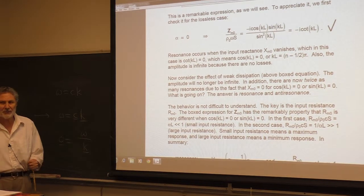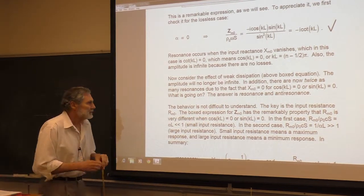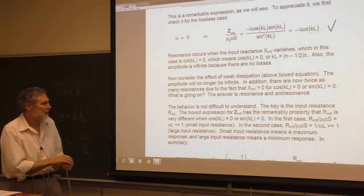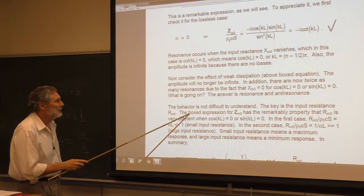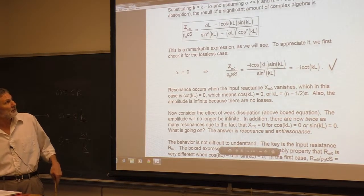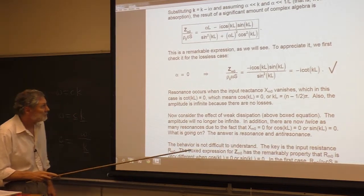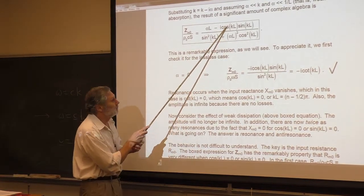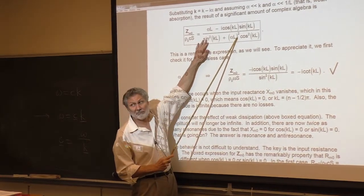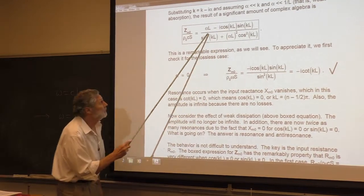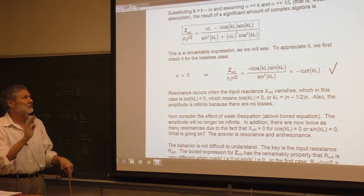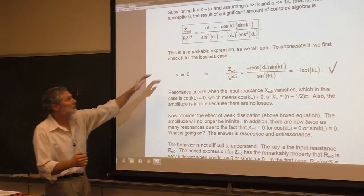The key to understanding this is to consider the input resistance — what the external agent driving the pipe sees or feels. There are two ways we can get resonance: this term can vanish or that term can vanish. When the cosine vanishes, the sine is one, and we look at the resistance part. We get alpha upstairs, so the resistance seen by the external agent is going to be small — relatively small — because we're assuming small alpha.